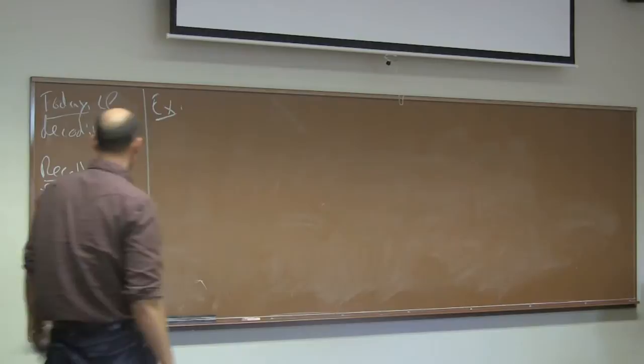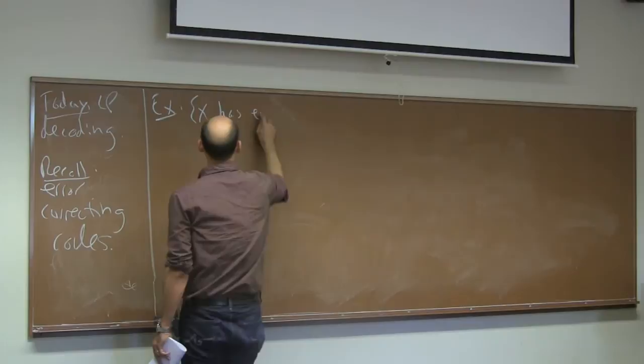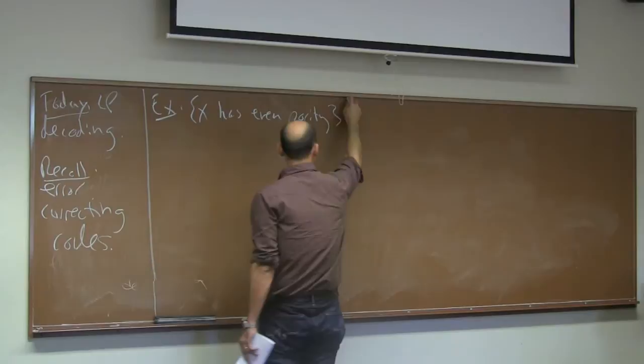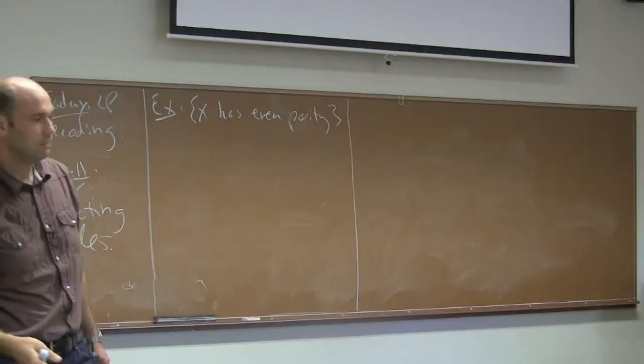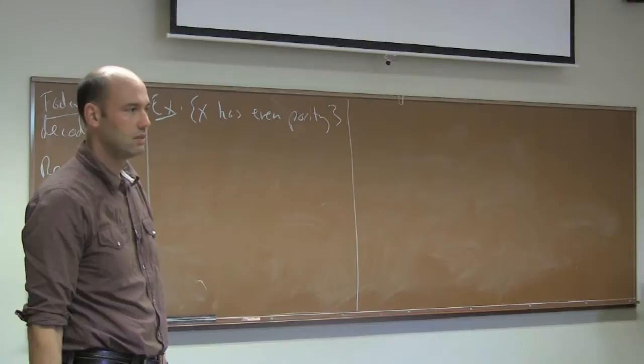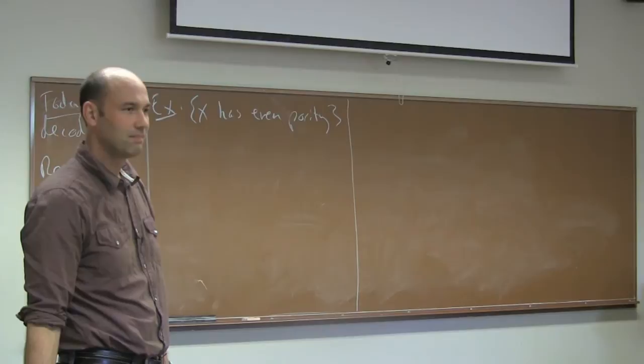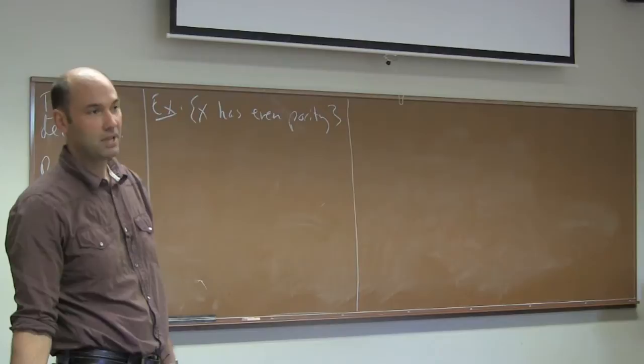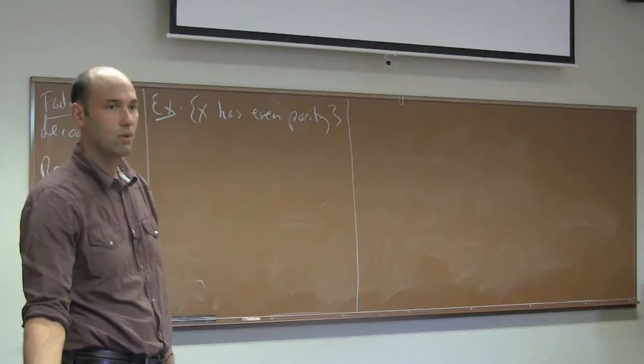Here's an example code: think about all the binary n-vectors that have even parity, meaning the number of ones is even. What would be the distance of this code? It would be two. If you flip one bit, it's not a code word, because all of a sudden you have an odd number of ones. But if you flip two bits, you can get back to a code word. So code words need to differ by at least two coordinates.